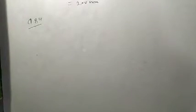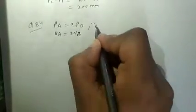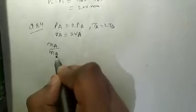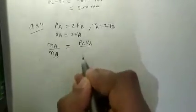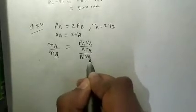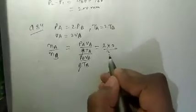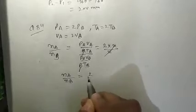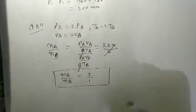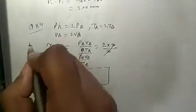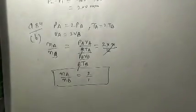Question 84: Two containers A and B have the same gas. Pressure of A is twice that of B, volume of A is twice that of B, and temperature of A is twice that of B. The ratio of moles: nA/nB = (pA·vA)/(R·tA) ÷ (pB·vB)/(R·tB). Since R cancels, and each of pA, vA, tA is twice the corresponding value for B, the 2s cancel pairwise and nA/nB = 2/1. The ratio of molecules is 2:1. Option B is correct.